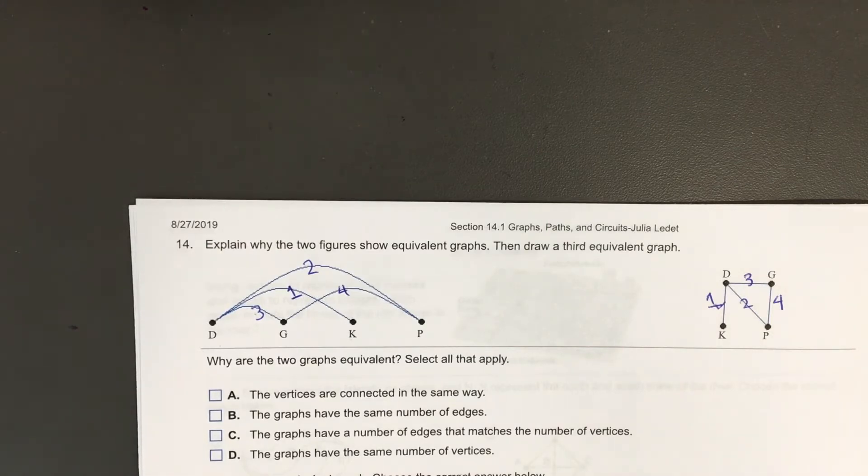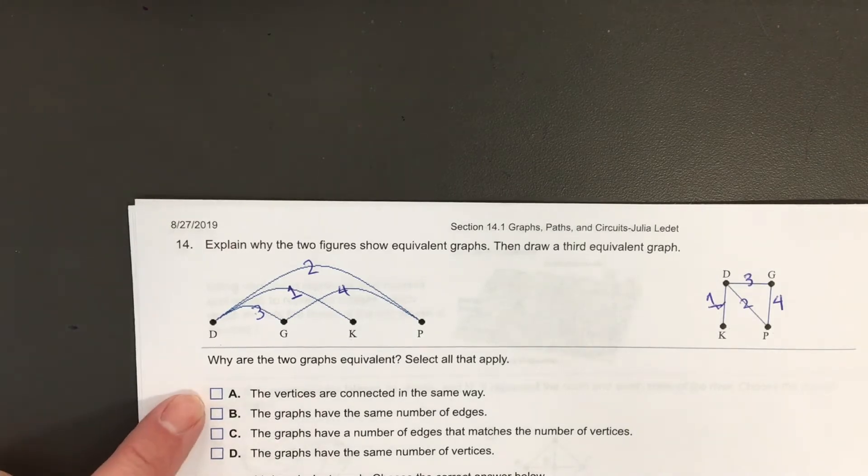This question, not only is this graph just terrible looking, what we're about to select is terrible as well. Why are the two graphs equivalent? Select all that apply.